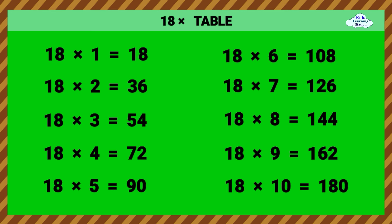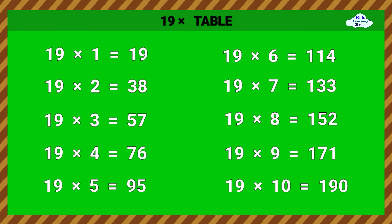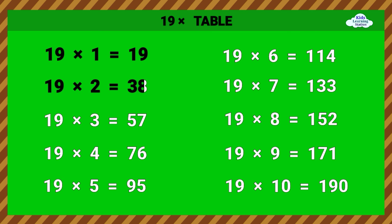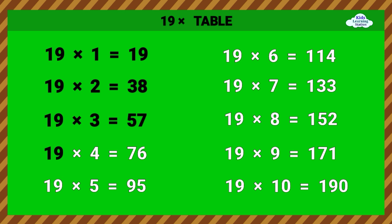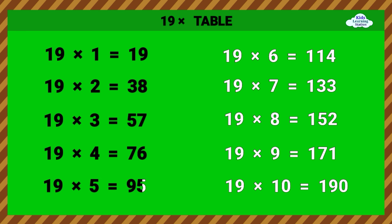19 times table. 19 times 8 equals 119. 19 times 8 equals 18. 19 times 8 equals 57. 19 times 4 equals 76. 19 times 5 equals 95.